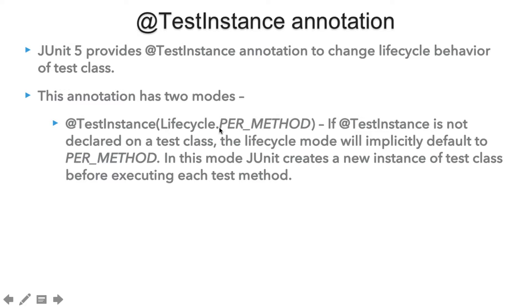What we mean by lifecycle per method is that in this mode, JUnit creates a new instance of the test class before executing each test method. So let's suppose we have written a test class with three test methods. When we execute the class, JUnit creates an instance of the test class for each and every test method. This behavior is by default, even if we don't put @TestInstance lifecycle per method on the test class.